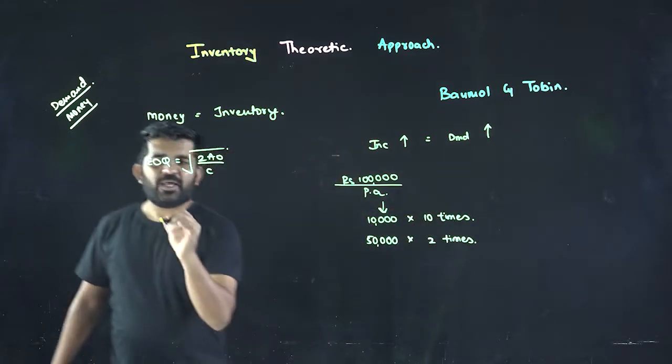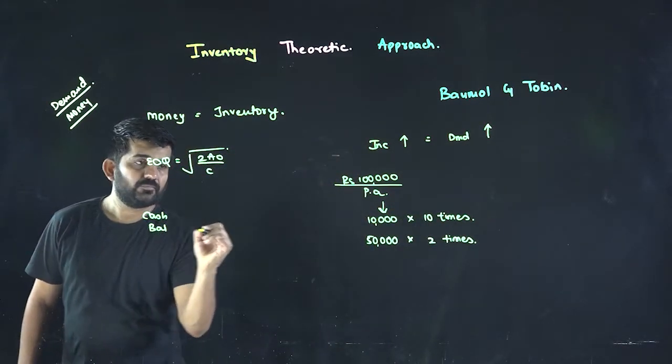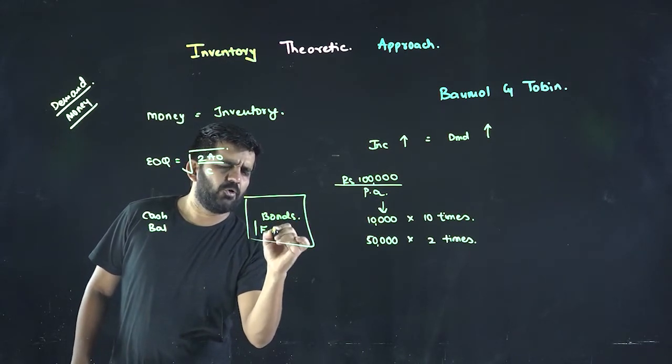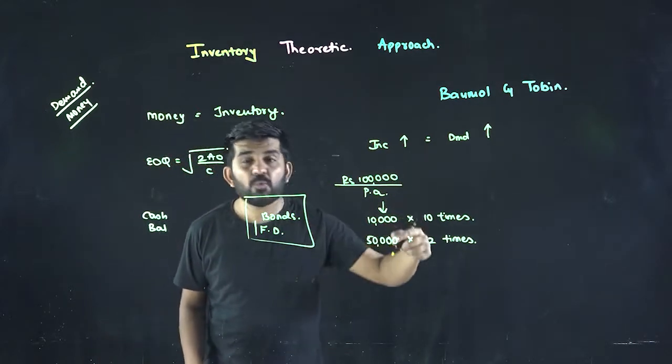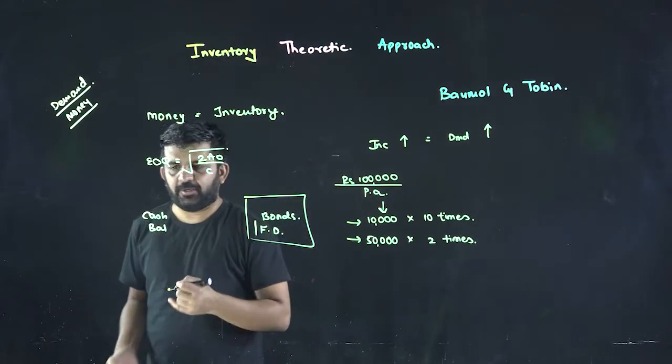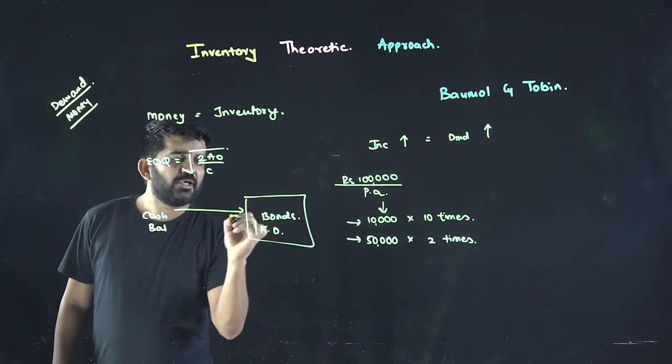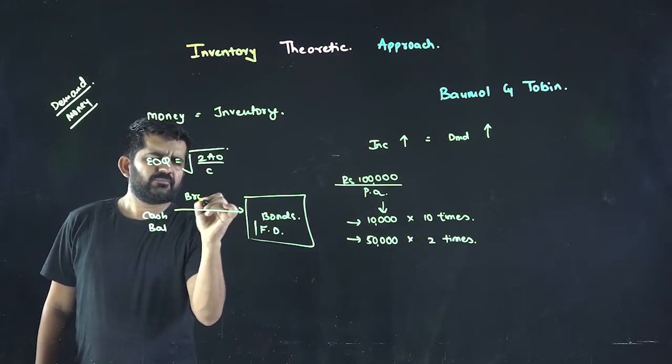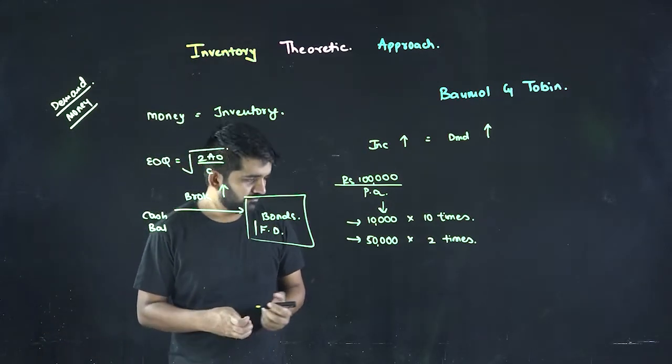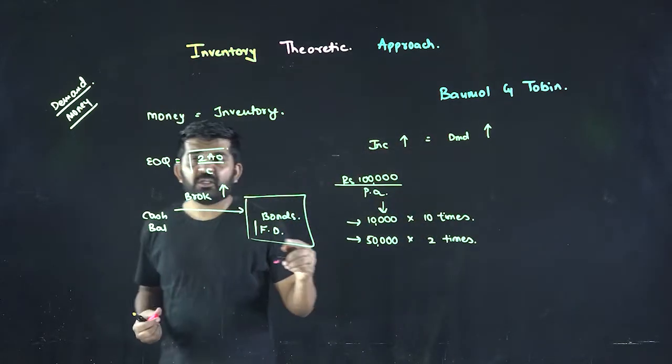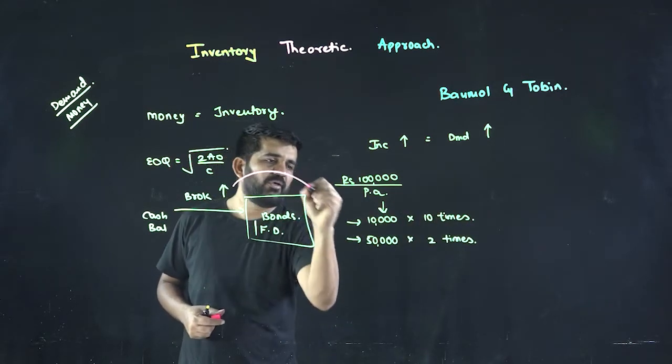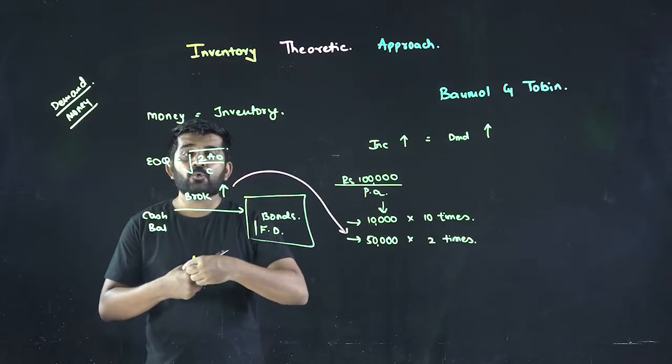We are having a cash balance. We want to keep it in bonds or fixed deposit. So it depends whether I'll be going for this approach or that particular option. If to keep a bond and fixed deposit, if the brokerage is higher, which approach will I go with? If the brokerage is higher, I'll not be keeping much many times, so I'll be going with this approach. But if the brokerage is lower...